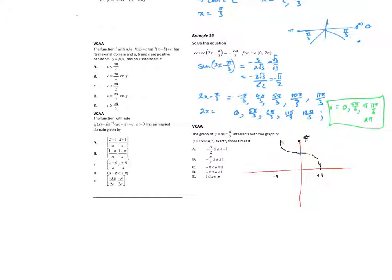The line passes through (0, π/2), and we need to find the gradient range. The steepest valid gradient going downward is the slope of the line connecting the endpoints of cos⁻¹(x): rise of π over run of 2, giving gradient -π/2.